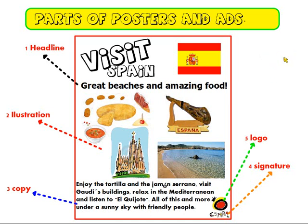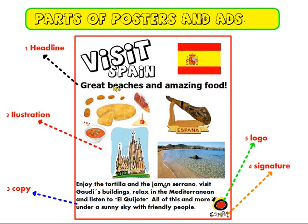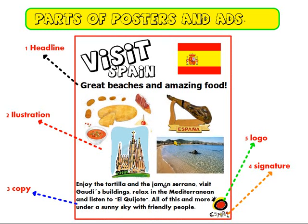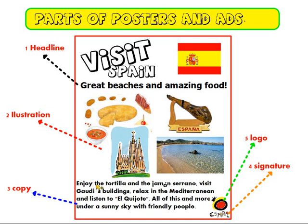Okay, this is a non-creative poster — an example for you to create for your English-speaking country. I made one for Spain. The headline is: Visit Spain — great pictures and amazing food. Then the illustration is complex: one, two, three, four parts of an illustration. Then the copy, where I give the information — all this is information about the country. And then at the end I put a logo, an image, and also the signature with the name of the company, or the country in this occasion.